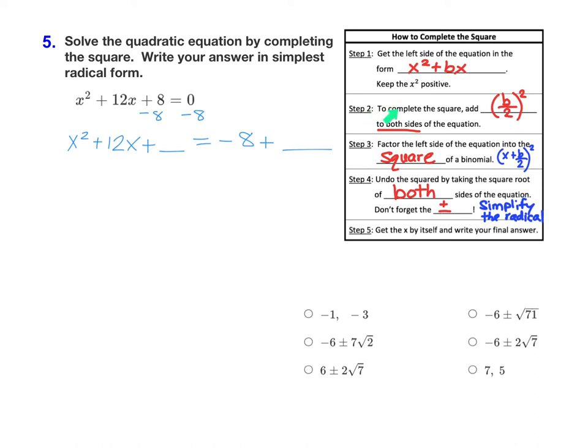That number that's going to go right there is b over 2 squared. Here, the b value is 12. So when we do b over 2 squared, that's just 12 divided by 2 quantity squared, which is 6 squared, and 6 squared is 36. So we'll want to add 36 on both sides. That just completed step number two.